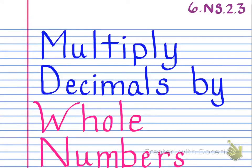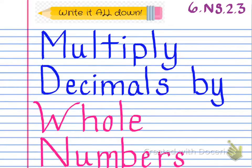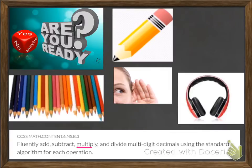Hi there everyone. Today we're going to talk about multiplying decimals by whole numbers, and this is standard 6.NS.2.3. You want to make sure that you're writing everything down that you see on the screen. You want to have your composition notebook, your colored pencils, your regular pencil, headphones so that you can listen to the video, and your listening ears should be on.